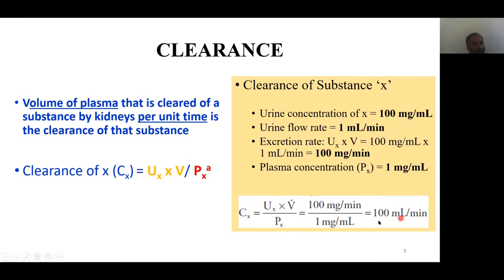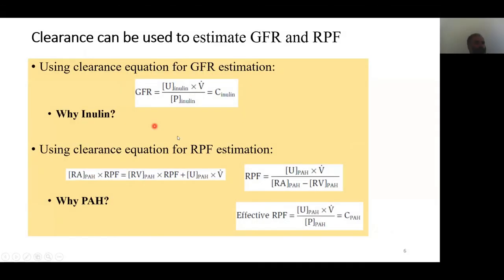As you can see, this is purely a filtration statistic — it shows how well your kidney is filtering a substance. Clearance can be used to estimate not just filtration but also renal plasma flow, though that's a bit tricky. We'll do GFR first. The clearance equation can be used to estimate GFR if the substance used is called inulin.